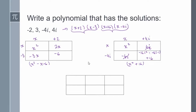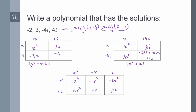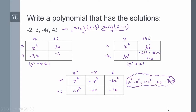Now take these two products and multiply them to get our final polynomial. x squared times x squared is x to the power of 4. x squared times negative x is negative x cubed. x squared times negative 6 is negative 6x squared. Positive 16 times x squared is 16x squared, and positive 16 times negative 6 is negative 96. Combining like terms: 16x squared and negative 6x squared give 10x squared. Our polynomial is x to the power of 4 minus x cubed plus 10x squared minus 16x minus 96.